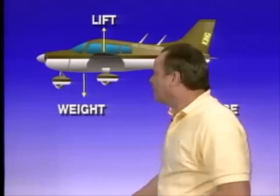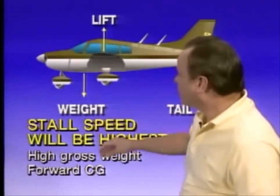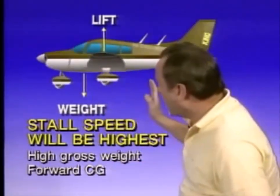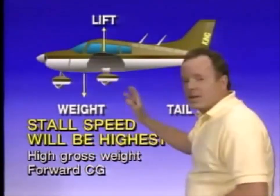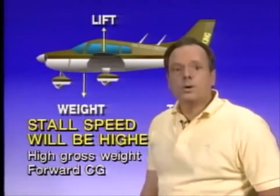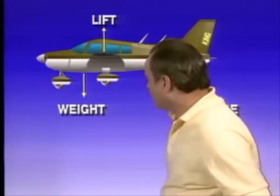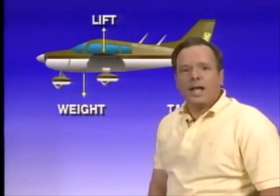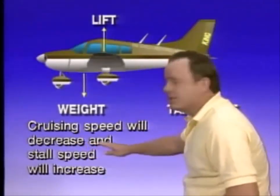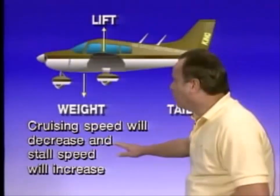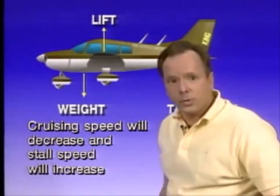When does CG affect stalling speed the most? If you have a high gross weight with the CG furthest forward, your stalling speed will be the highest because the wings have to support the most weight. When the CG is moved from the aft limit to the forward limit, the cruising speed of the aircraft will decrease because the airplane is less efficient and stall speed will increase.